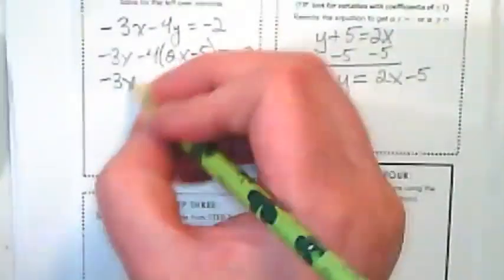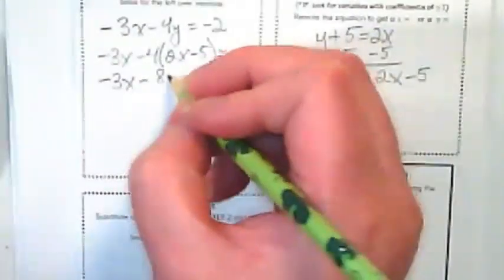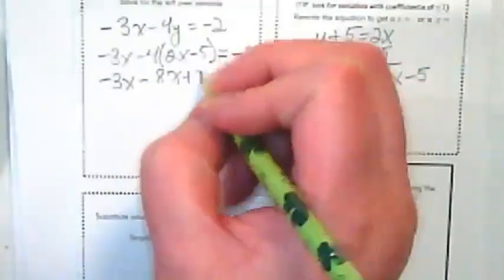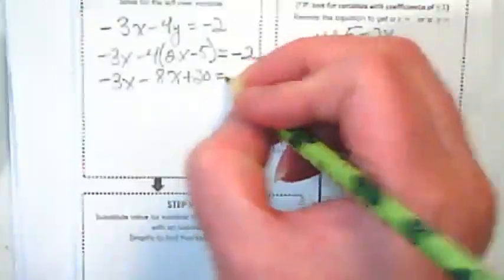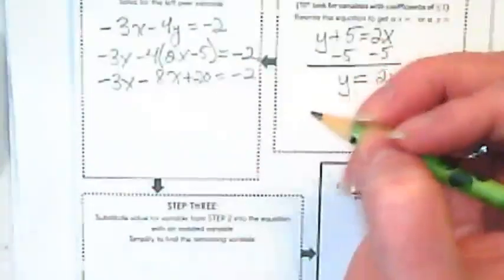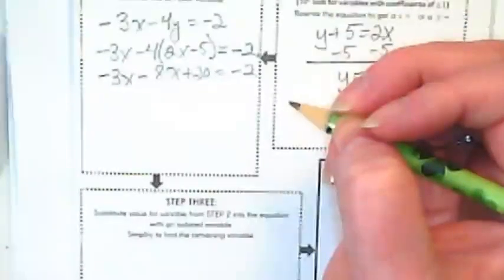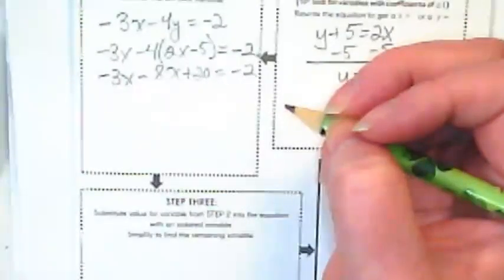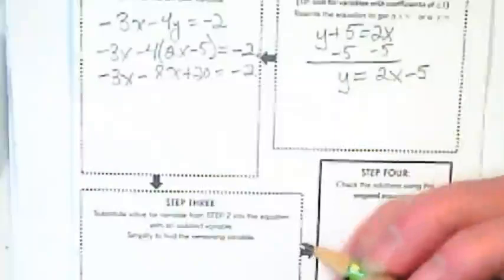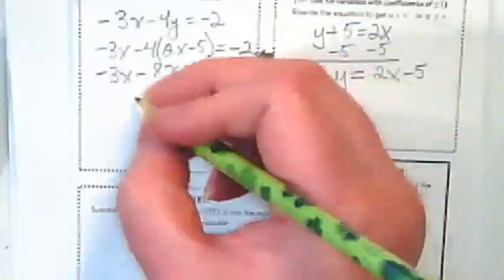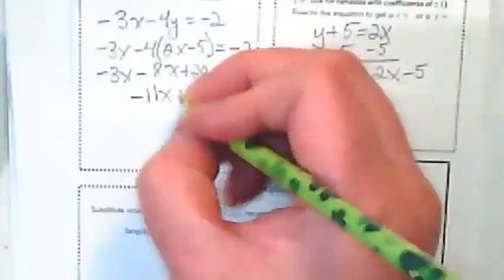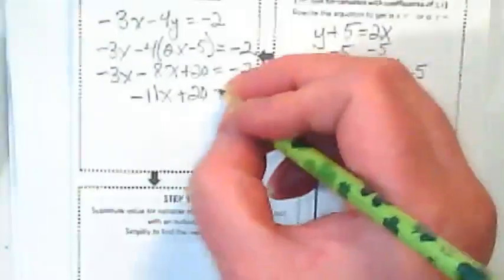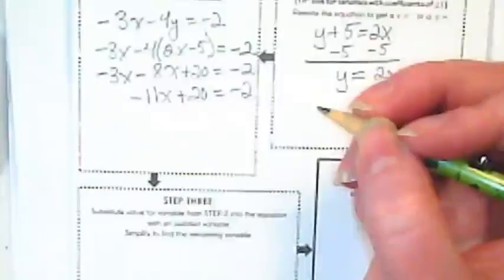We're going to start off by distributing that negative 4. Then we're going to combine like terms: negative 3x and negative 8x is negative 11x plus 20 equals negative 2.